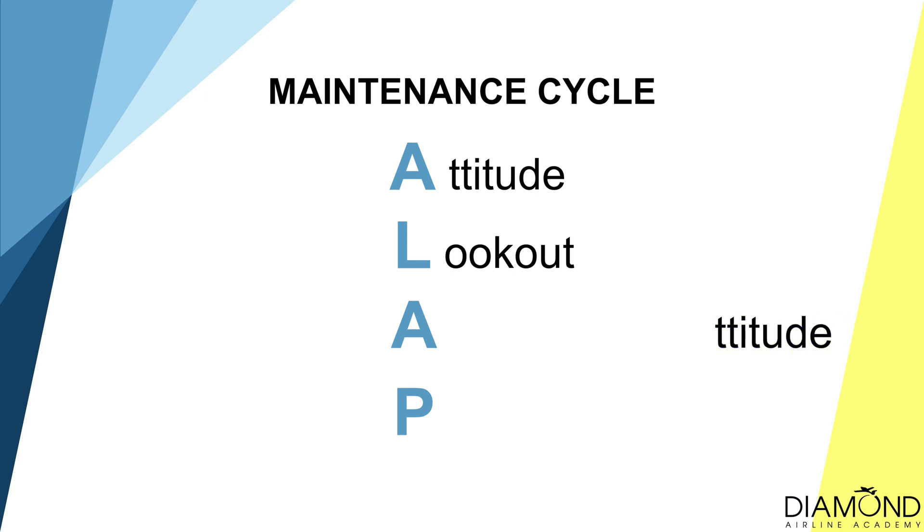Now we've entered the climb. The next phase is to maintain the climb using the work cycle ALAP — Attitude, Lookout, Attitude, Performance. For attitude, maintain the corresponding climbing attitude depending on what climb we're doing. For lookout, clear up ahead for traffic and obstacles to make sure there's no danger. Back to attitude, maintain the correct climbing attitude. For performance, check our heading against the heading bug and altimeter bug set during pre-entry, check our speed to ensure we're maintaining the correct speed, and check engine parameters to ensure all indications are within the normal range.